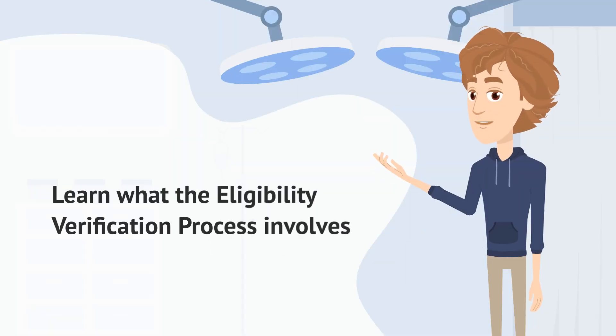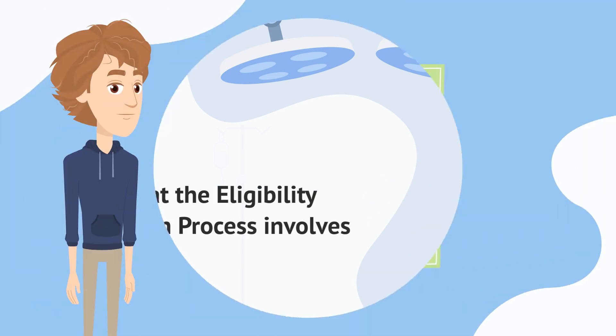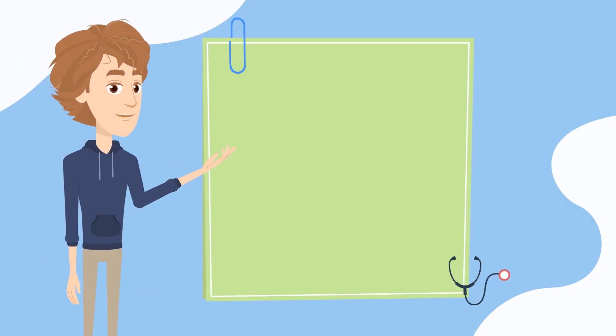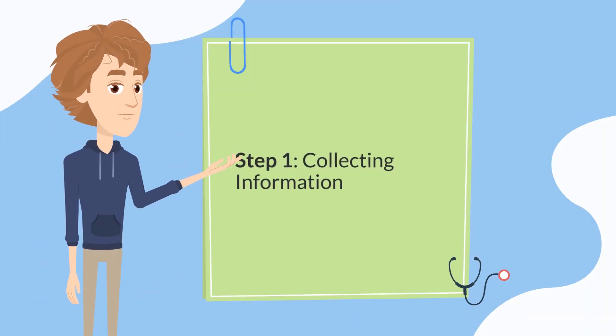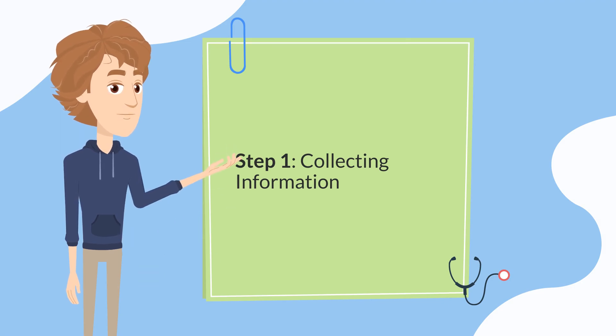So what does the eligibility verification process involve? Collecting information — that includes the patient's name, date of birth, insurance information, etc.